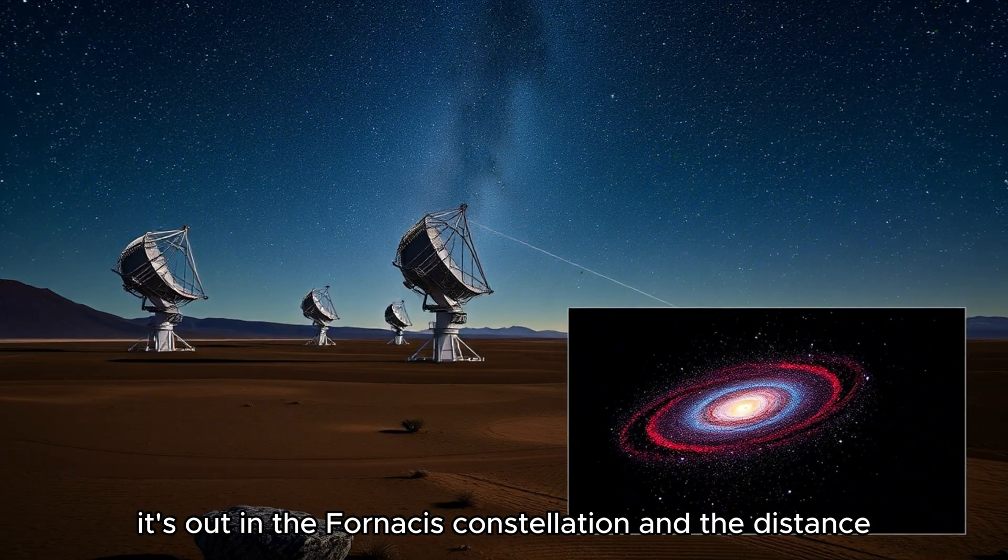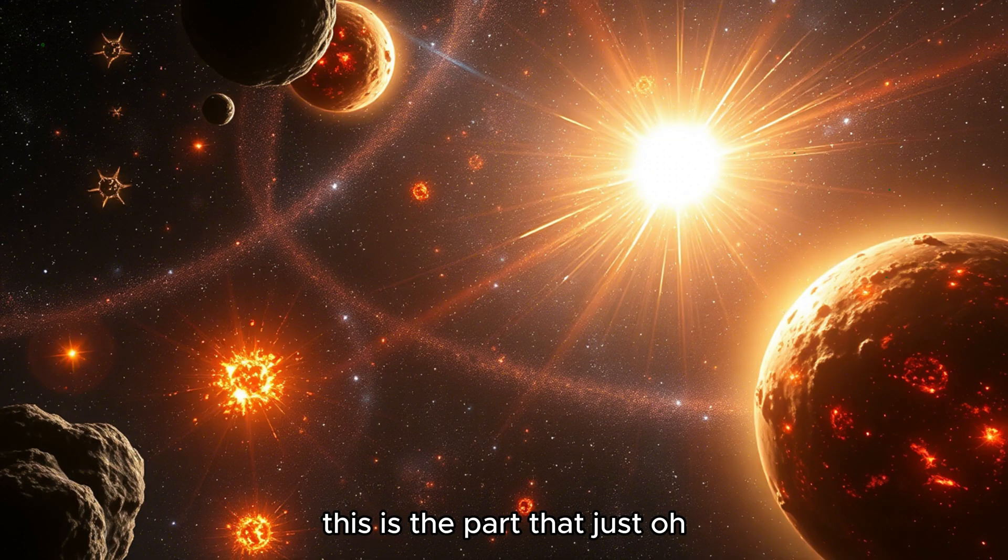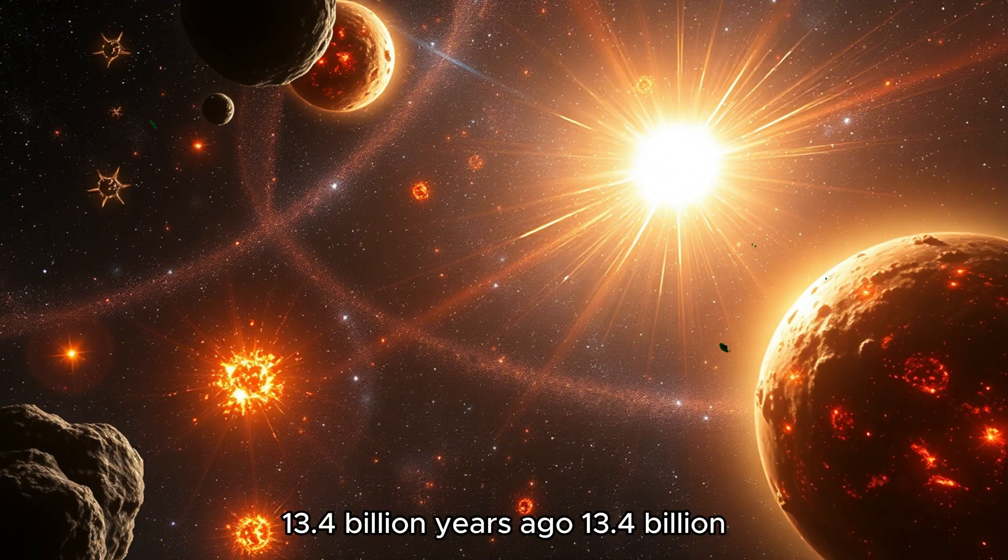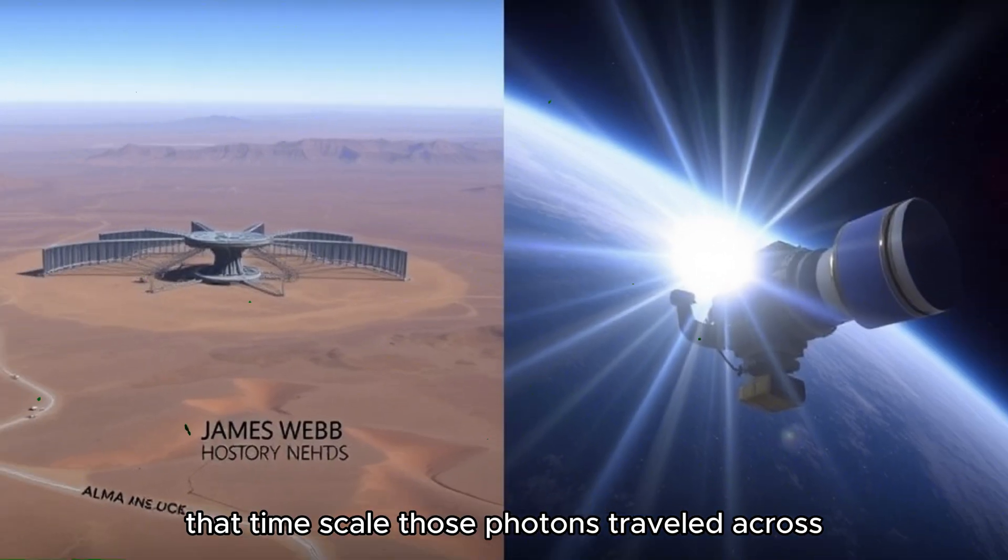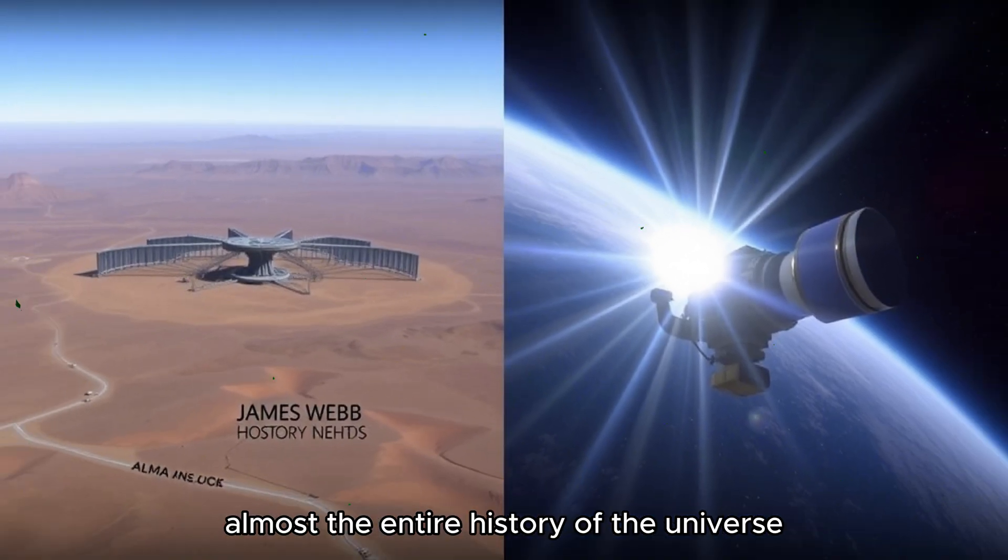That's right. The farthest confirmed galaxy. It's out in the Fornax constellation. And the distance, this is the part that just blows my mind. The light we're seeing now left that galaxy 13.4 billion years ago. 13.4 billion. It's almost impossible to really visualize that timescale.